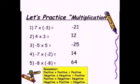Now let's practice multiplication sums. Remember: positive multiplied by positive is positive. Negative multiplied by negative is positive. Positive multiplied by negative is negative. Negative multiplied by positive is negative. In short, if two signs are different, the answer is negative; if two signs are the same, the answer is positive. Examples: 7 multiplied by minus 3 — both signs are different — answer is minus 21. 4 multiplied by 3 — signs are same — answer is positive 12. Minus 5 multiplied by 5 — signs are different — answer is minus 25. Minus 7 multiplied by minus 2 — signs are same — answer is 14. Minus 8 multiplied by minus 8 — both signs are same — answer is positive 64.